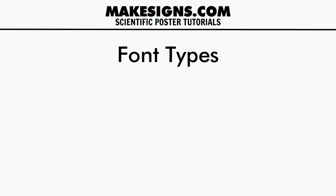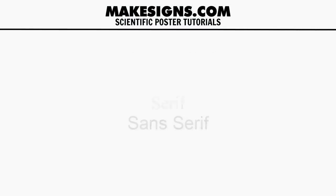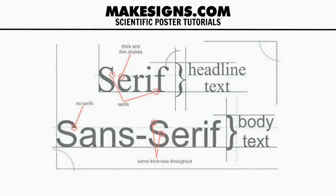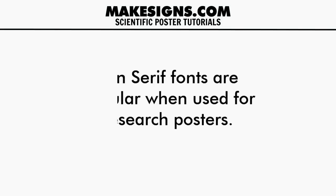There are two major groupings of fonts: serif and sans-serif. Serif fonts have little bumps called serifs, and sans-serif means without serifs — they don't have those bumps. The sans-serif fonts look a little more modern, and that's why most people use them for their posters. They're also a little bit easier to read.